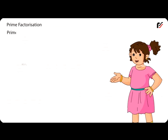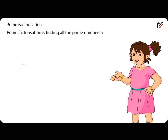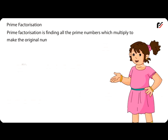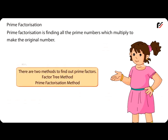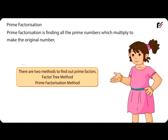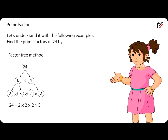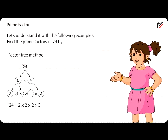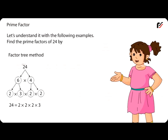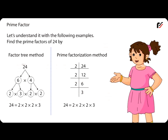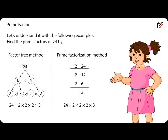Prime Factorization: Prime factorization is finding all the prime numbers which multiply to make the original number. There are two methods to find out prime factors: Factor tree method and Prime factorization method. For example, find the prime factors of 24 by factor tree method. Hence, 24 = 2 × 2 × 2 × 3. Now, find the prime factors of 24 by prime factorization method. Hence, 24 = 2 × 2 × 2 × 3.